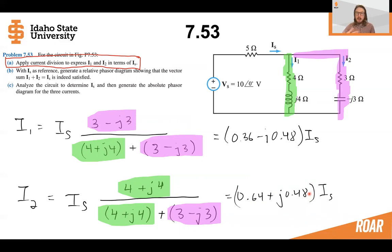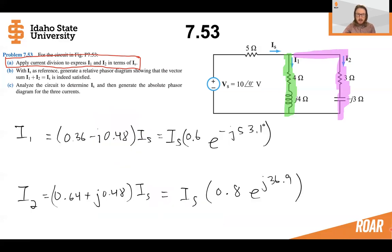As I mentioned in another video, you can solve this much more quickly using a calculator. Make sure that you know how to use your calculator to quickly do this type of problem, otherwise it may take you quite some time. We can find the rectangular form of I1 and I2 as a function or in terms of IS, and then we can also convert this into the phasor domain, again quite quickly if you know how to use your calculator.